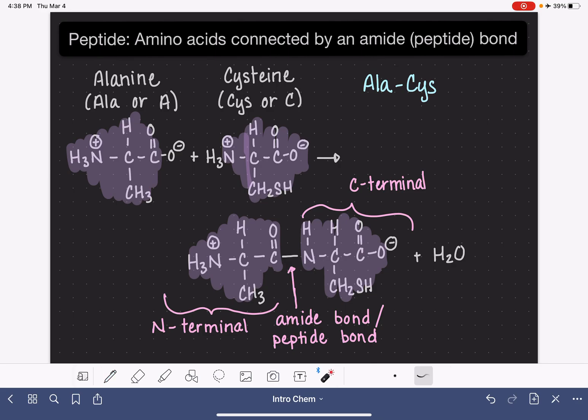If we use single-letter abbreviations, we just put all those letters together in a row—no dashes. For single-letter abbreviations, there's no dash between each symbol. For three-letter abbreviations, we have a dash between each abbreviation. Regardless, we always write these from the N-terminal to the C-terminal, left to right.